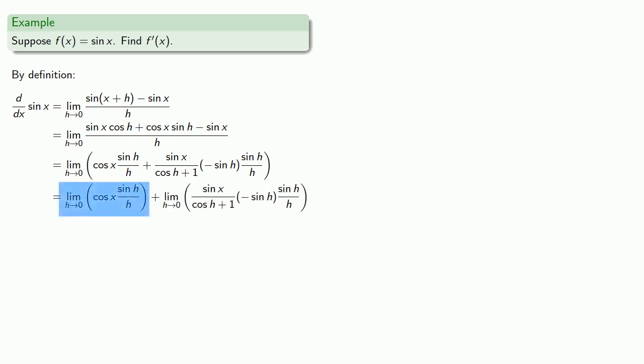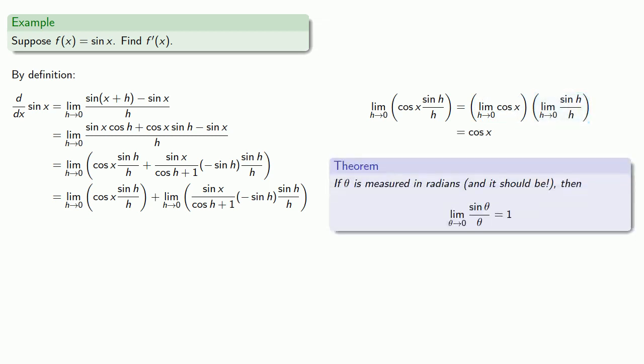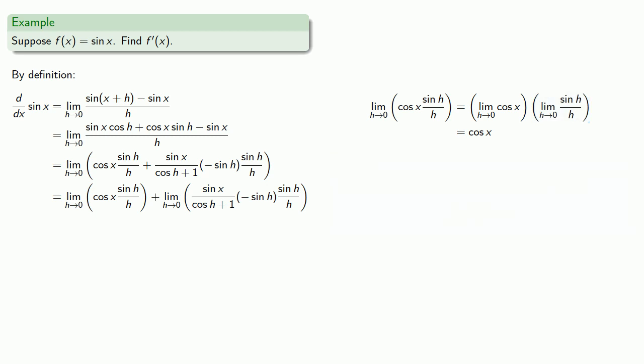And this first limit, well, that's a product, and so the limit of a product is the product of the limits. As h goes to zero, cosine x doesn't do anything. And sine h divided by h goes to one. And so this limit will just be cosine x.